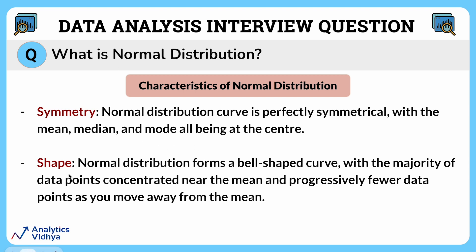Talking about shape, the normal distribution forms a bell-shaped curve with the majority of data points concentrated near the mean and progressively fewer data points as you move away from the mean.